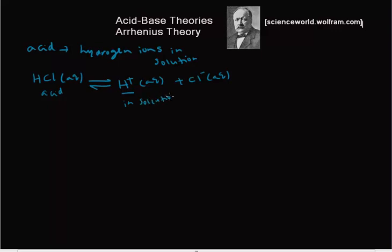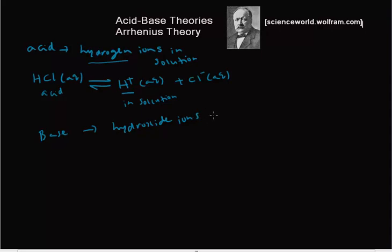So that's what an Arrhenius acid is — it can produce hydrogen ions in solution. And then he said a base is a substance that can produce hydroxide ions. Let's take an example and try to understand what this means.